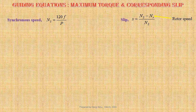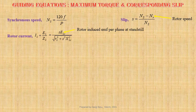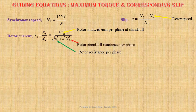Expression for rotor current I2 equals to E2 by Z2, that is equal to S times E2S divided by root over R2 squared plus S squared X2S squared, where E2S is the rotor induced EMF per phase at standstill condition, R2 is the rotor resistance per phase, and X2S is the rotor standstill reactance per phase.